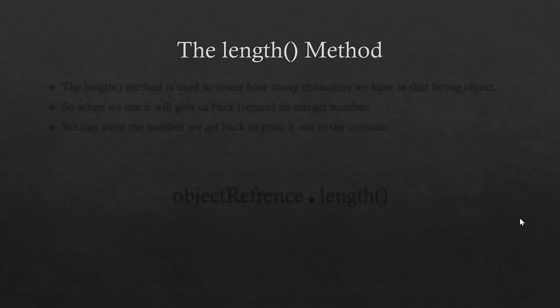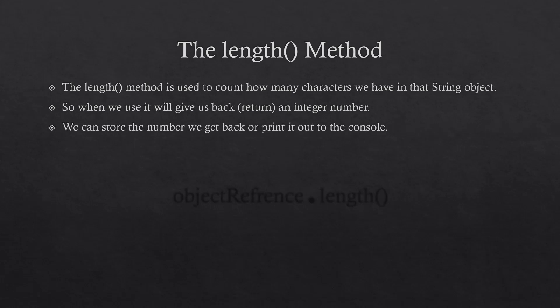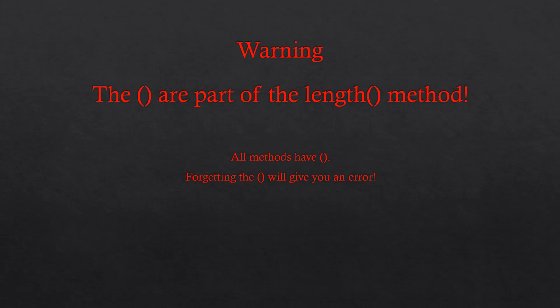The first method we looked at in the string class was the length method. We use it to count how many characters we have in that string object — it returns an integer number representing the number of characters. We can print that integer out to the console or store it in an integer variable. To use it: object reference dot length. It's important to remember that parentheses are part of the method — some methods have values inside and some have empty parentheses like the length method.